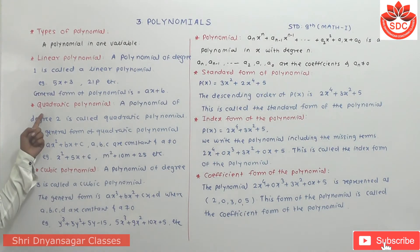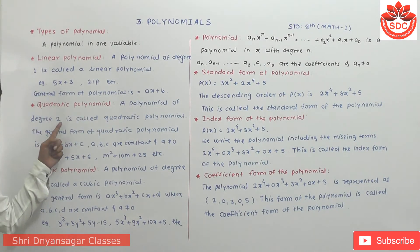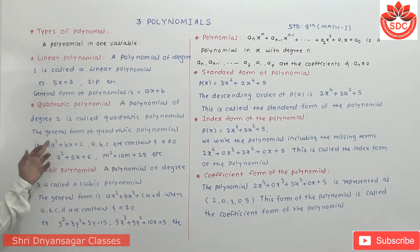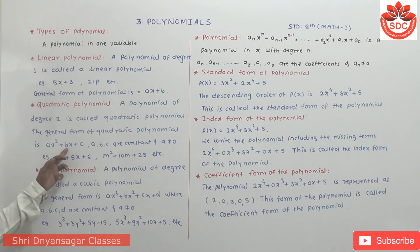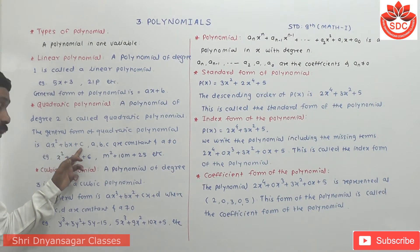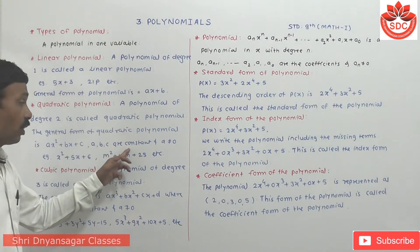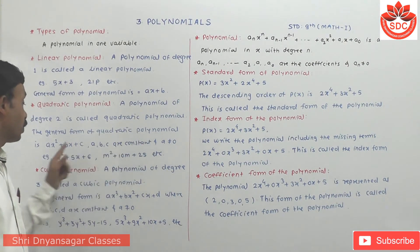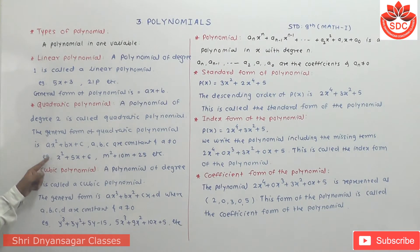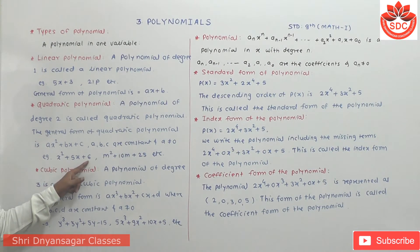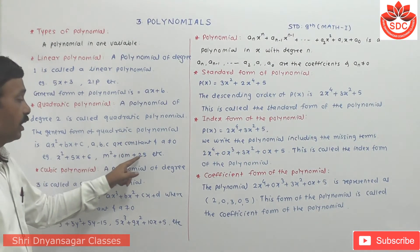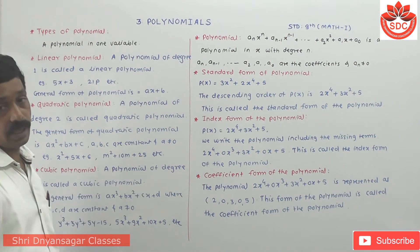Quadratic polynomial: a polynomial of degree 2 is called as the quadratic polynomial. The general form is ax² + bx + c, where a, b, c are constants and a ≠ 0. For example: x² + 5x + 6, or bm² + 10m + 25, etc.